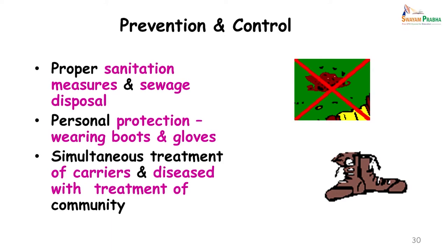For prevention and control of hookworm infestations: proper sanitation measures are essential, sewage should be properly disposed, and personal protection is very important — those who work in soil should wear boots and gardeners should wear gloves. Simultaneous treatment of carriers and the diseased will ensure treatment of the whole community. To summarize the hookworm cycle: Ankylostoma duodenale and Necator americanus have an indirect cycle, entering the host through skin penetration, reaching the lungs, and via the trachea getting into the intestine where adult worms mature and cause blood loss.